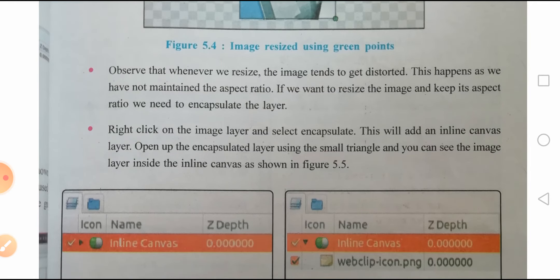Observe that whenever we resize, the image tends to get distorted. This happens when you zoom a particular picture. This happens as we have not maintained the aspect ratio. If we want to resize the image and keep its aspect ratio, we need to encapsulate that layer.